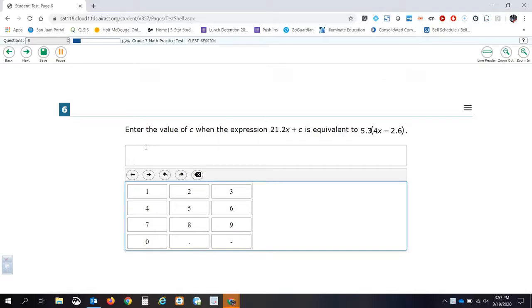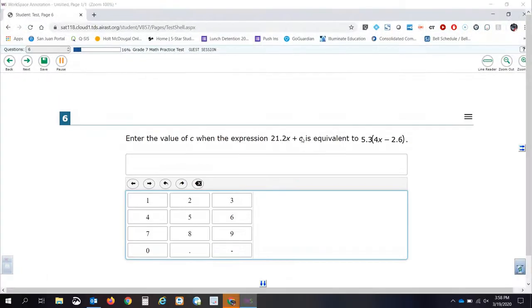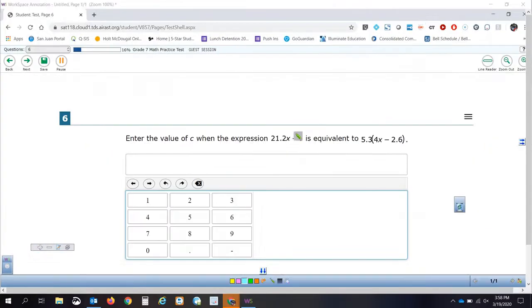So here we go. Question number 6 says: enter the value of C when the expression 21.2x plus C is equivalent to 5.3 times the quantity of 4x minus 2.6. Kind of confusing. So when they say enter the value of C, what they're actually asking us to do is find this value of C right there.